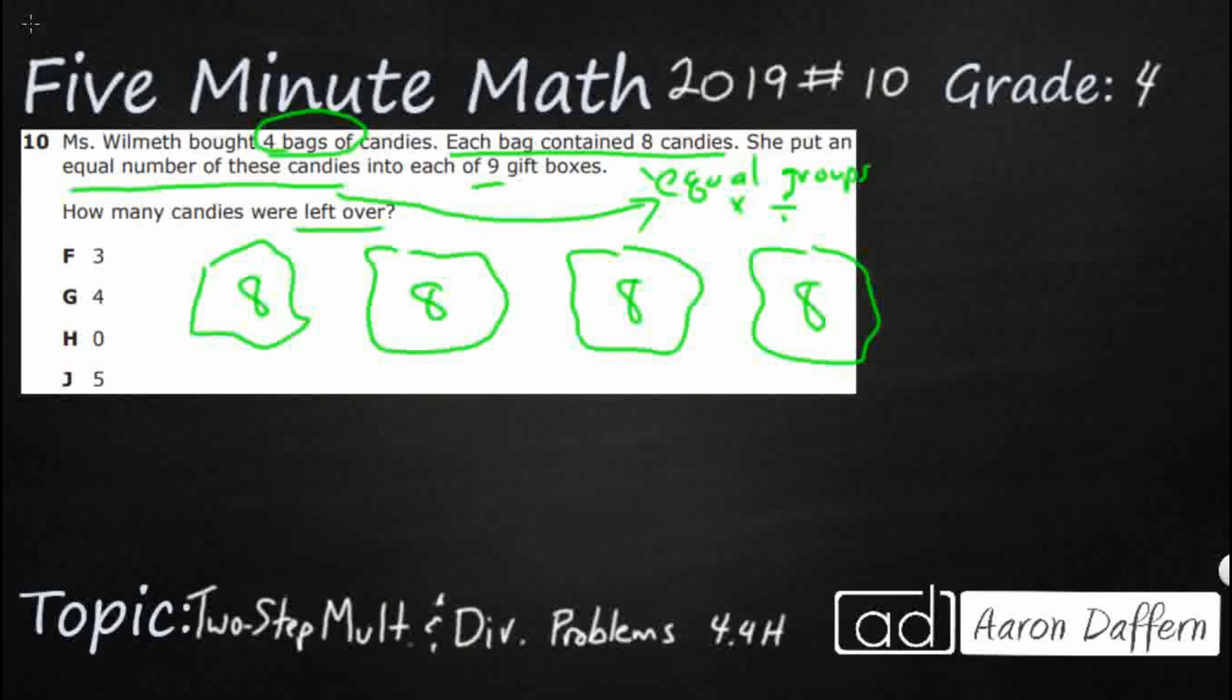And then she's going to put an equal number of these candies in nine gift boxes. So what we've got to do is we've got to take this. I'm just going to draw a little three by three grid here. That's going to help. So here are my nine gift boxes. So we've got to take all of these here and we've got to shove them into these equally. We've got to figure out what's left over.